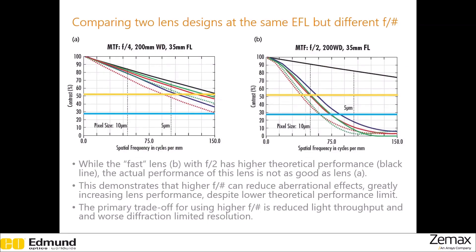Now we will compare two lens designs where the same focal length is used but they have different F-numbers. Normally you would think that a lower F-number lens will collect more light and perform better, and this is correct — the diffraction-limited performance confirms that the low F-number lens is better. But when you look at the other lines on the MTF curve, the F2 lens performs much worse compared to the other. This is due to aberrations that present themselves when a low F-number is used. Keep in mind that using a high F-number may give good results in some cases, but diffraction-limited resolution would be compromised and longer exposure time may be needed to account for reduced light throughput.